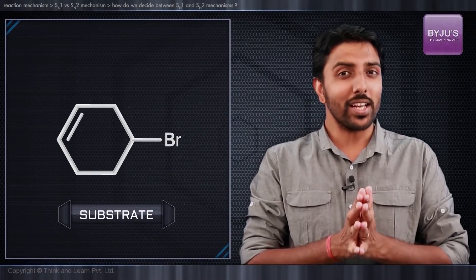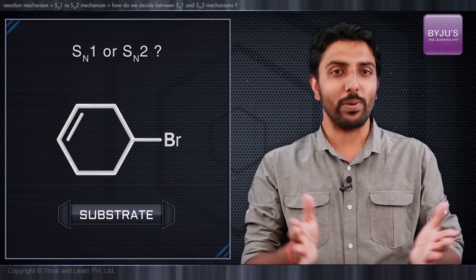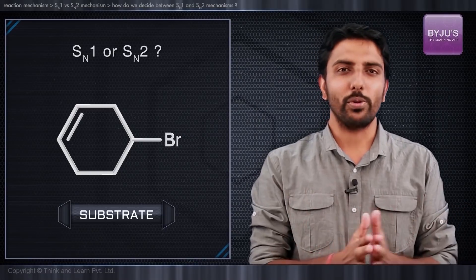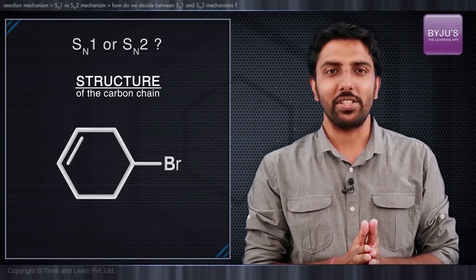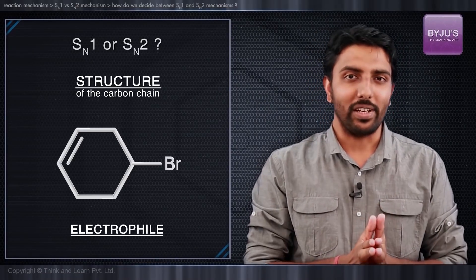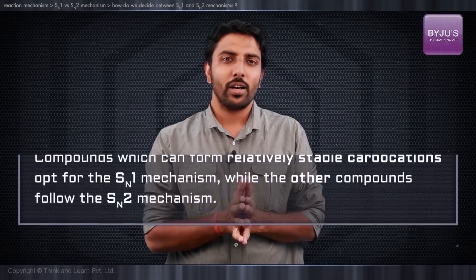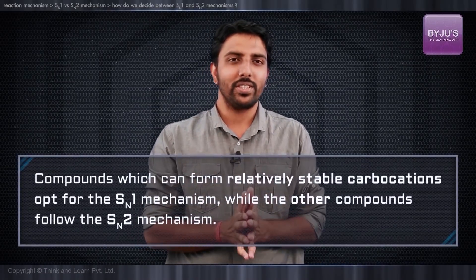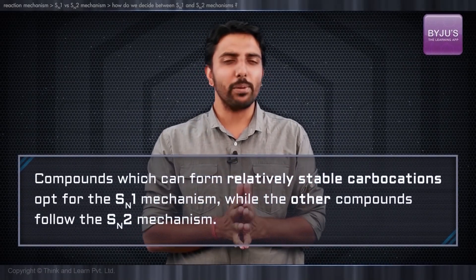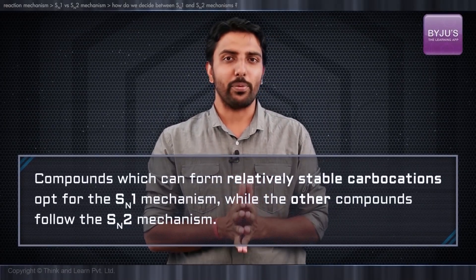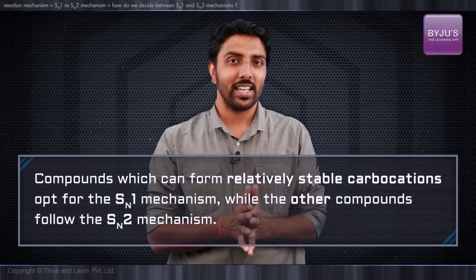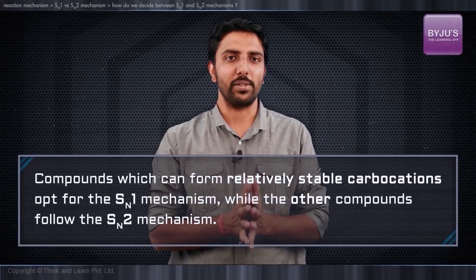Suppose you are given a substrate and you are asked to decide between SN1 and SN2 mechanisms. How do we go about that? This largely depends upon the structure of the carbon chain or the electrophile. We have a very good rule of thumb: compounds which can form relatively stable carbocations do so and opt for the SN1 pathway, while others have to react via the SN2 mechanism.